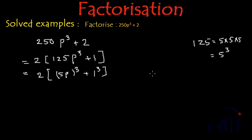Now we can apply the formula of a³ + b³ which is (a + b)(a² - ab + b²).